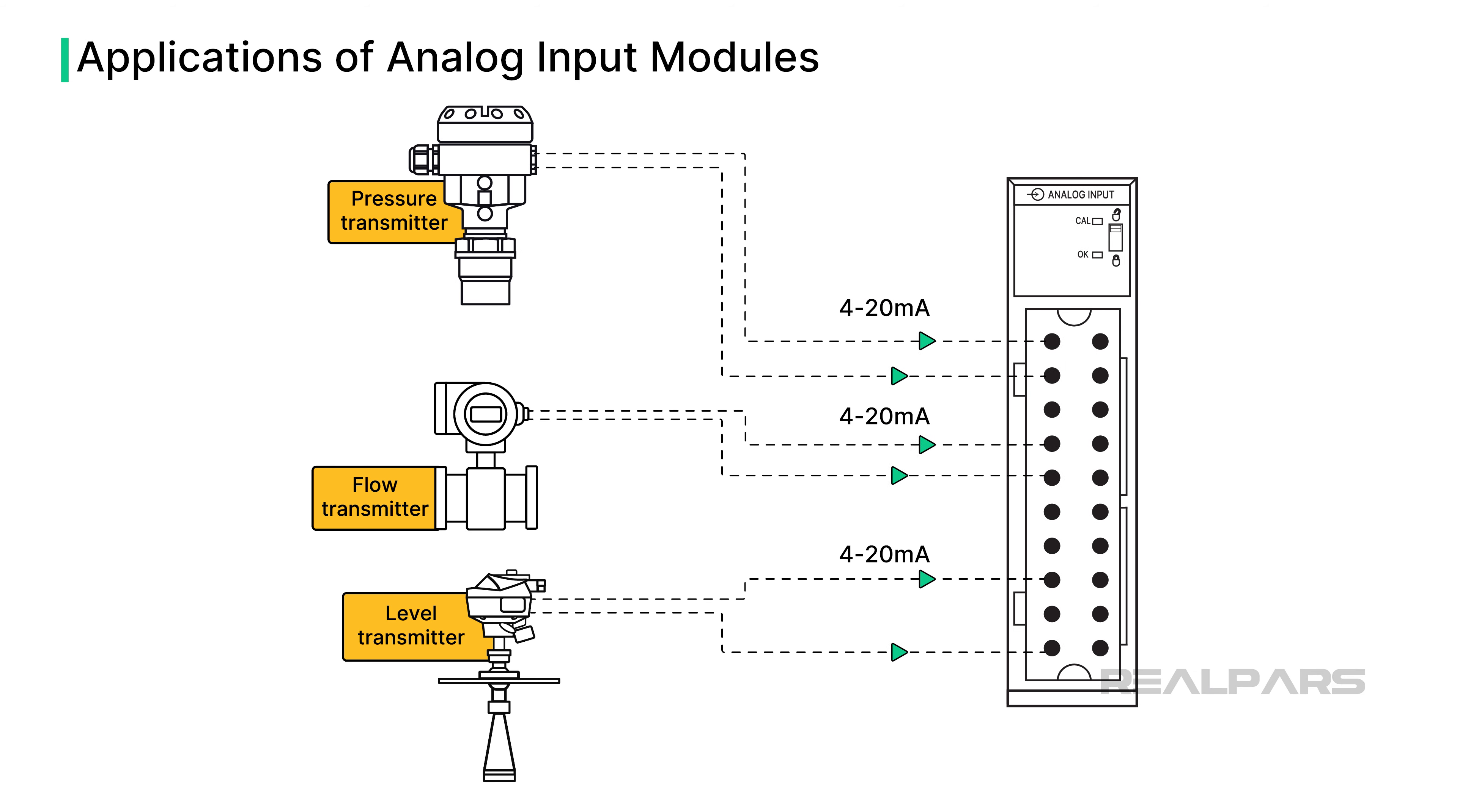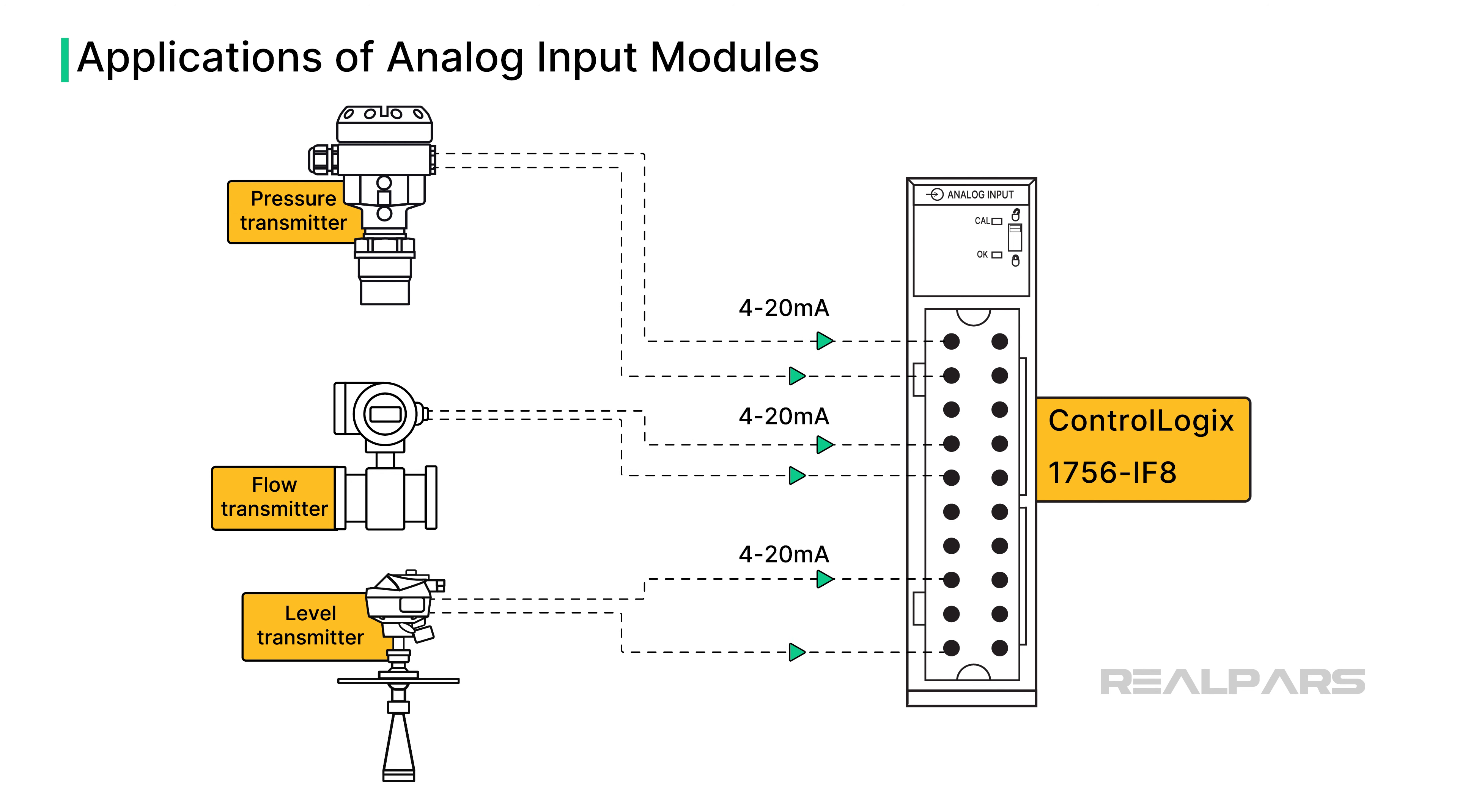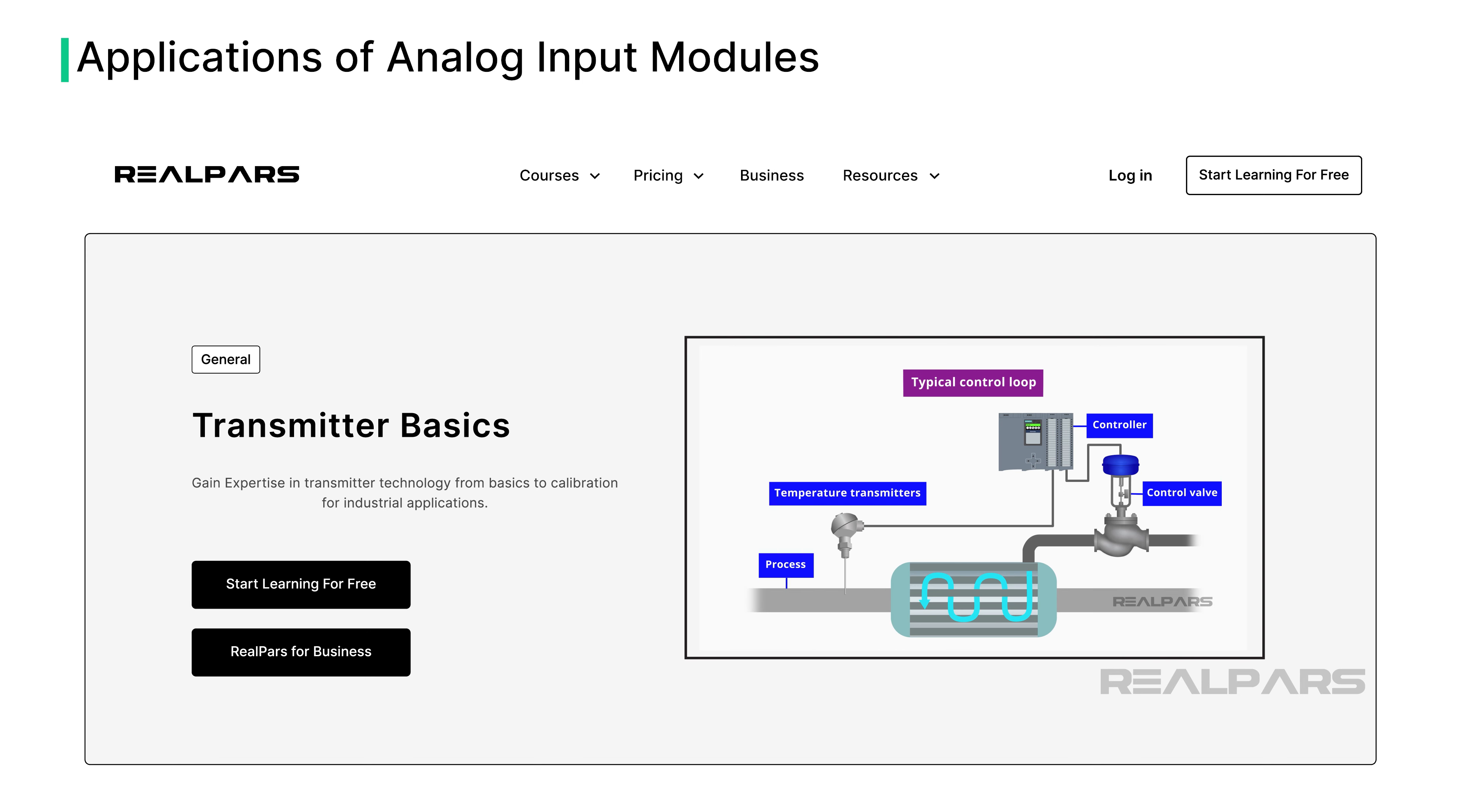We can also use the same analog input module for flow and level measurement. Why? Because the 4 to 20 milliamp signal can represent any variable. For example, the Allen-Bradley ControlLogix 1756 IF8 analog input module can connect up to 8 channels or input loops. Again, if you're a RealPars member, you can learn more about how a temperature transmitter can be calibrated in the Transmitter Basics course.